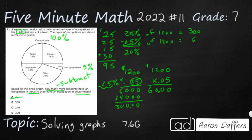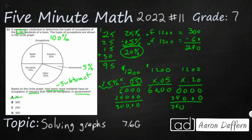Now I can subtract these two: 300 minus 60 equals 240. So the answer is 240. Or, if you wanted to do 1,200 times 0.20 — because 20% is the difference in the percentages — you get straight to 240 as well. Either way, your answer is C, 240.